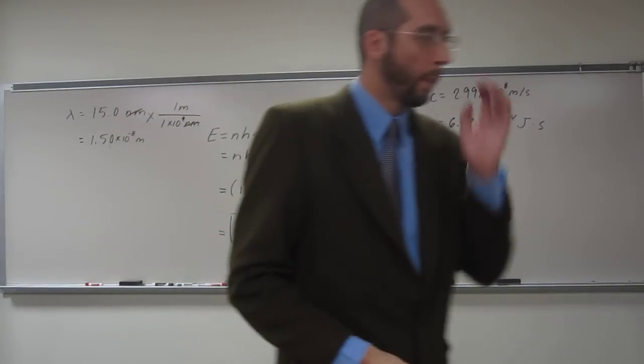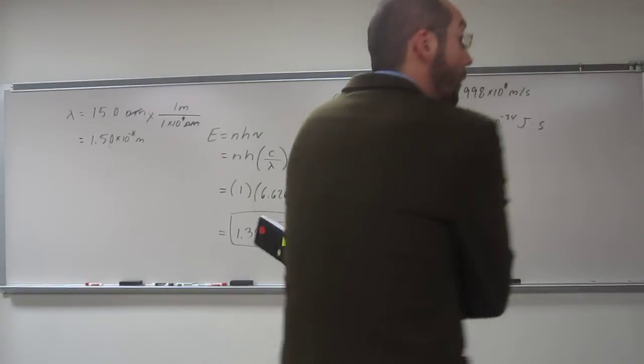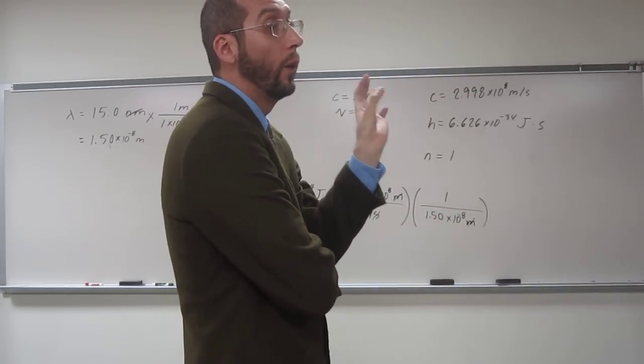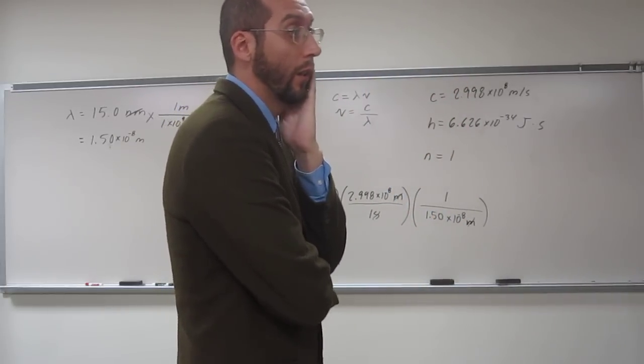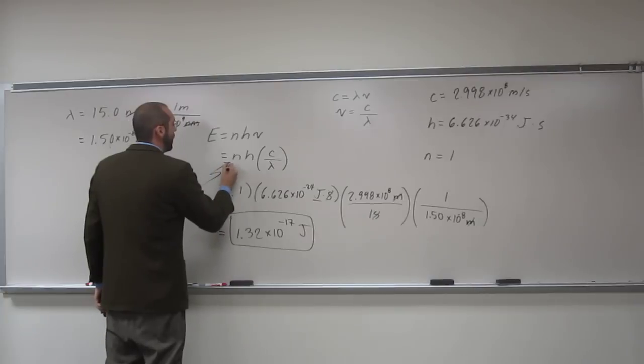I just wanted to know, how did we know it was one photon? Like, you just assume that? Because it's asking? Yeah. So when it doesn't ask you, it's expecting you to do one photon. It'll tell you, like, sometimes it'll say, what's the energy of one mole of photons? And in that case, you'd do 6.022 times 10 to the 23rd.